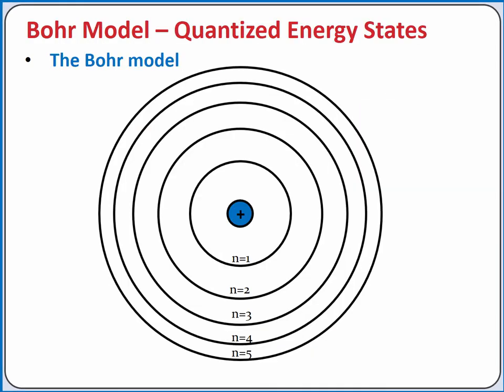The Bohr model was developed to explain these results. In the Bohr model, the energy of an electron is quantized, which means an electron in an atom can have only particular discrete values of energy. We label these values of energy as energy levels: n equals 1, n equals 2, n equals 3, and so forth.